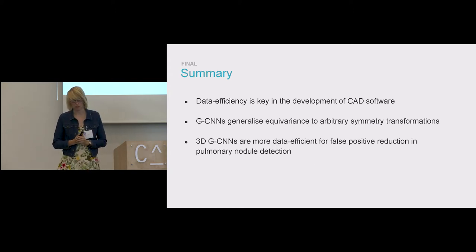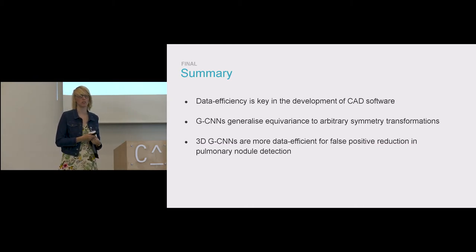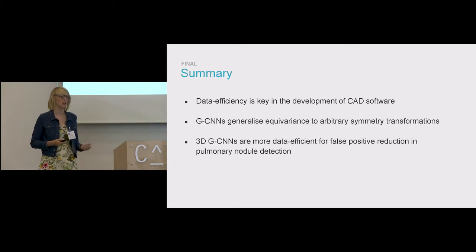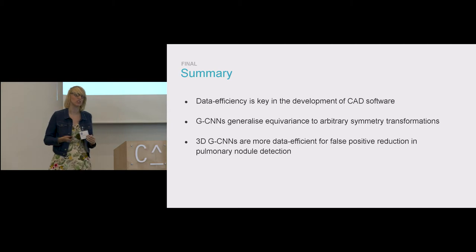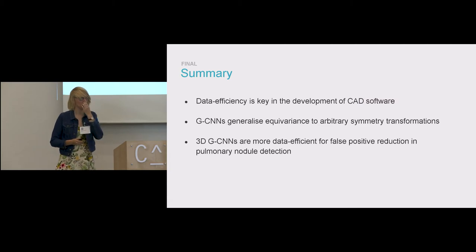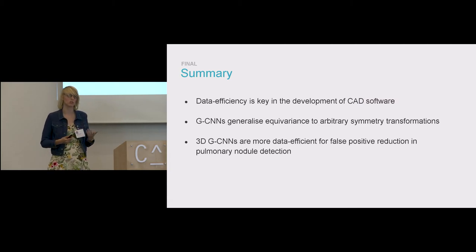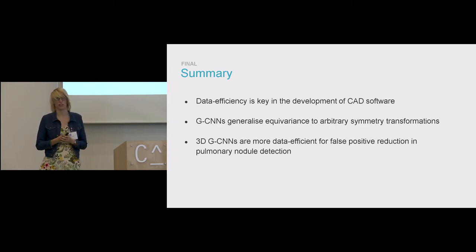To summarize: data scarcity is an issue in the medical domain, and we've reduced the sample complexity of CNNs by exploiting structural knowledge of the data with regards to symmetry, giving us GCNNs. We applied these GCNNs to the problem of false positive reduction in pulmonary nodule detection and found that results are up to 10 times more data efficient — they perform as well as a regular CNN does on 10 times the amount of data. We also found faster convergence, and our GCNNs are slightly more sensitive to malignant nodules rather than just nodules as a whole.